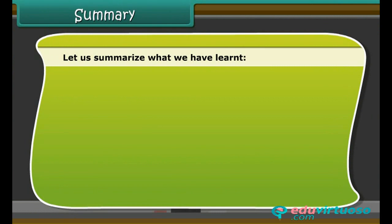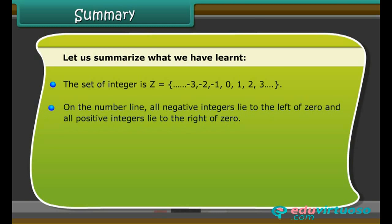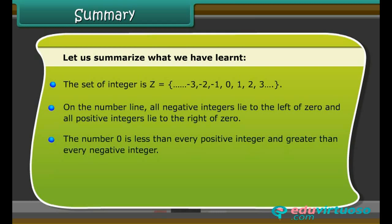Let us summarize what we have learned. The set of integers is Z which is equal to (minus 3, minus 2, minus 1, 0, 1, 2, 3...). On the number line, all negative integers lie to the left of 0 and all positive integers lie to the right of 0. The number 0 is less than every positive integer and greater than every negative integer.